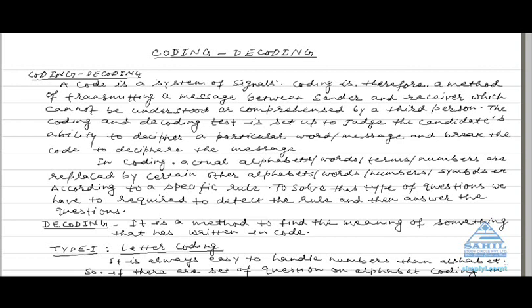In coding, actual words or numbers are replaced by certain other words, alphabets, or numbers. Decoding is a method to find the meaning of something that is written in code.